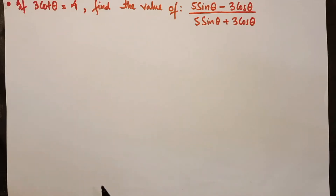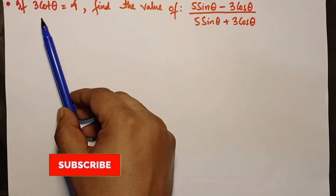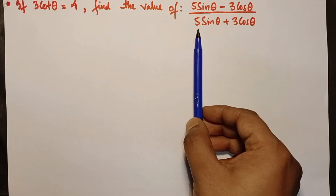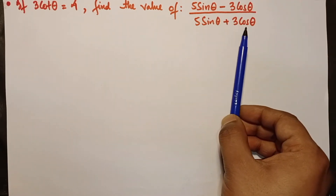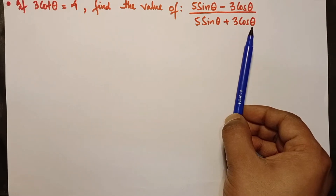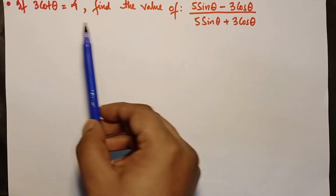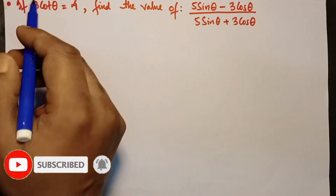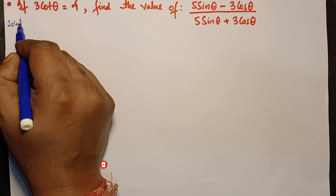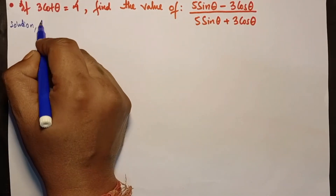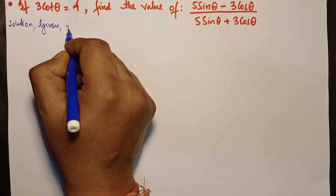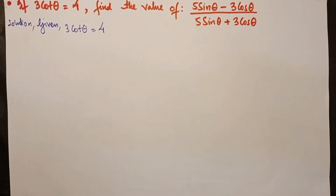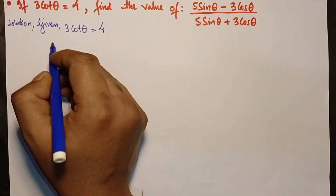Hello students. The question is: if 3cotθ = 4, find the value of (5sinθ - 3cosθ) / (5sinθ + 3cosθ). I have shown this type of problem in my previous video and it can be solved in two different ways. Given: 3cotθ = 4.